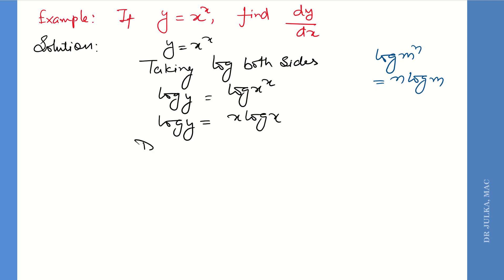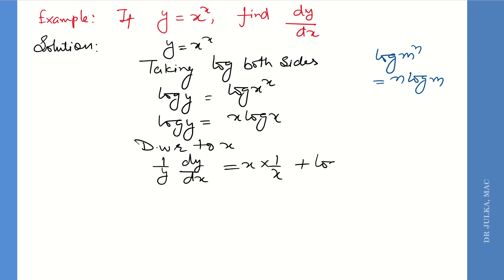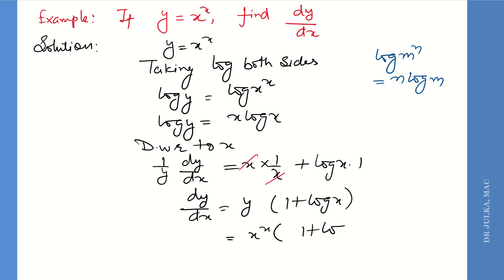Differentiating with respect to x: the derivative of log y is (1/y) dy/dx. For x log x, we use the product rule — x as it is, derivative of log x is 1/x, plus log x as it is, derivative of x is 1. After simplifying, we get y multiplied by (1 + log x). Then replace y by x^x, so the answer is x^x (1 + log x).